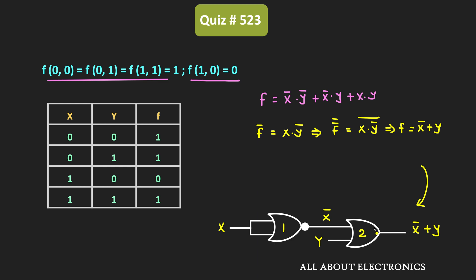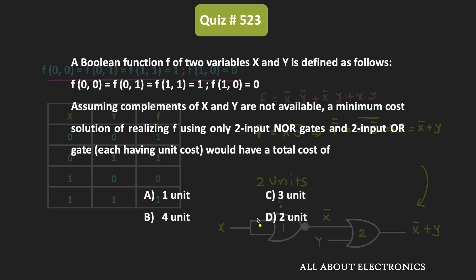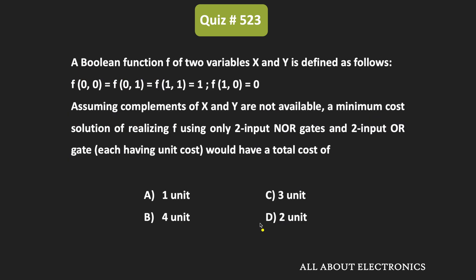We can say that for implementing this function, we require one NOR gate and one OR gate. In this way, the total required cost of implementing this function is equal to 2 units. So from this, we can say that for the given question, option D is the correct answer.